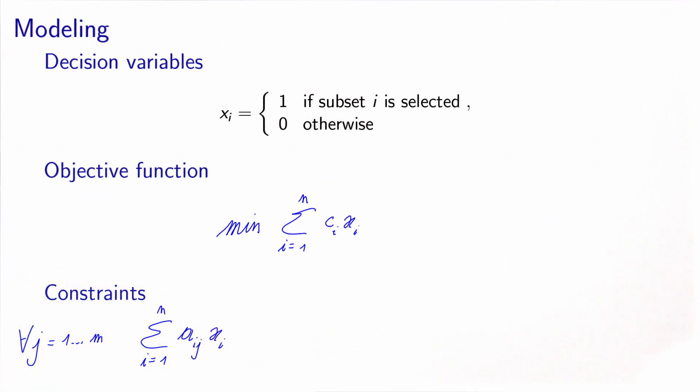Here, we have a case where we model a conjunction. In order to have access to item j from collection i, two things need to be verified. j must be in i. This is modeled by this constant here. And I need to decide to buy i. And the product represents the conjunction, the logical conjunction.